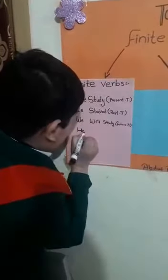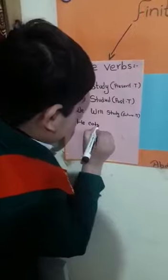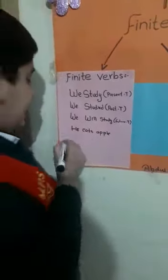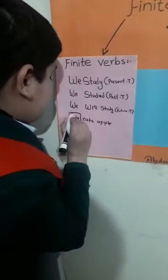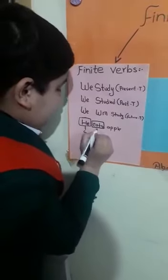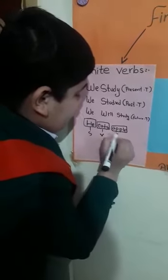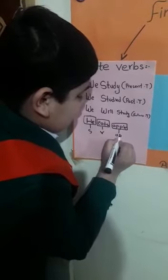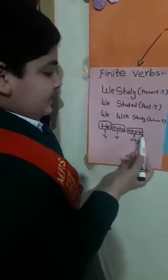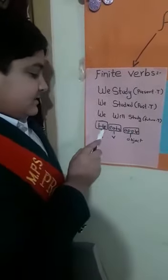Another example: 'He eats apple.' Here, 'he' is the subject, 'eat' is the verb, and 'apple' is the object. 'He eats apple' — it is present tense, so it is a finite verb. Here 'he' is a singular subject.